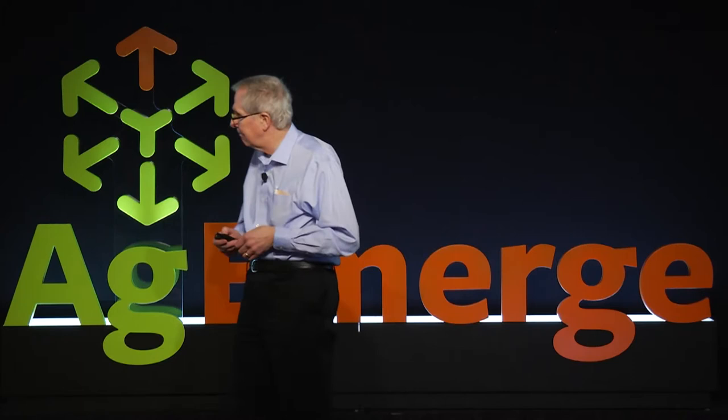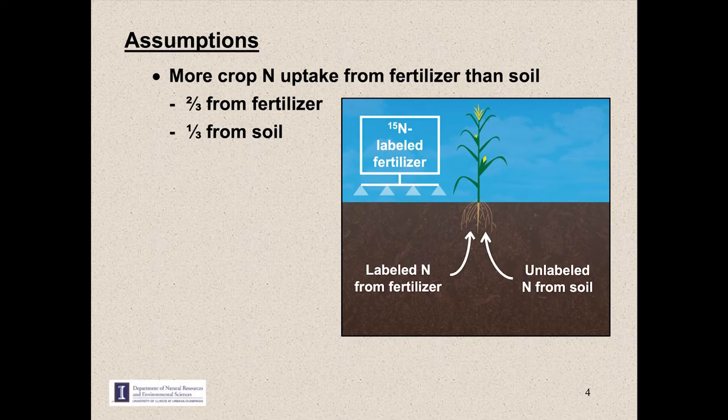That static plot design leads to the first of two key assumptions behind the proven yield method. This one says that at harvest, the crop has taken up two-thirds of its nitrogen from the fertilizer and only one-third from the soil.